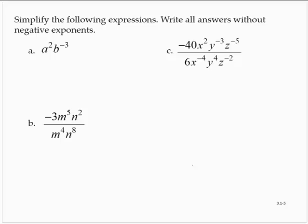Simplify the following expressions. Write all answers without negative exponents. Our main rule for negative exponents is that if we have a base, if we have x to the negative nth power, we can rewrite that as 1 over the base to the positive power.